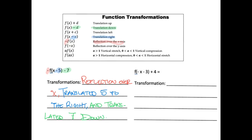For the last example, we also have three things happening: a negative, a subtraction, and an addition. We'll go step by step. First, the negative is only multiplying the x value — multiplying only x means this is a reflection over the y-axis. That's the first thing happening.